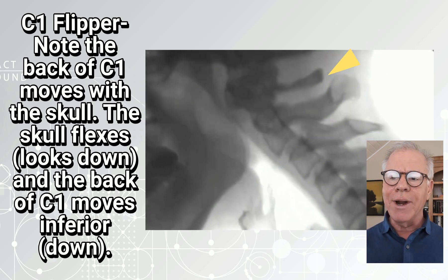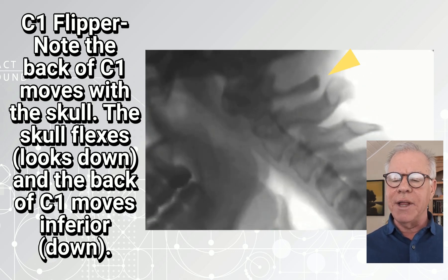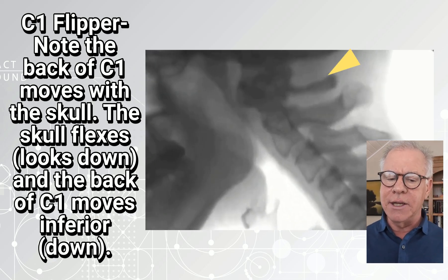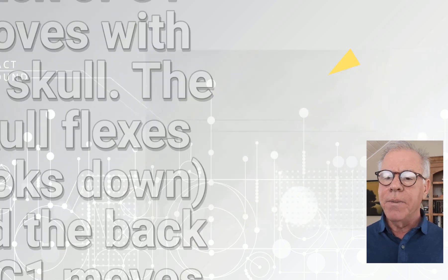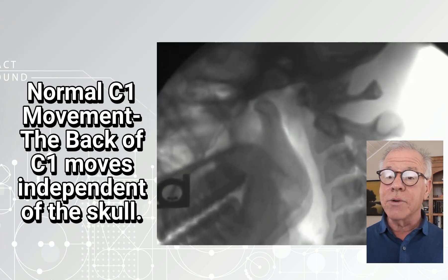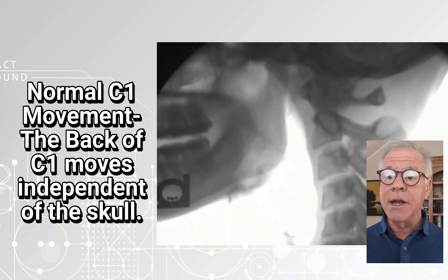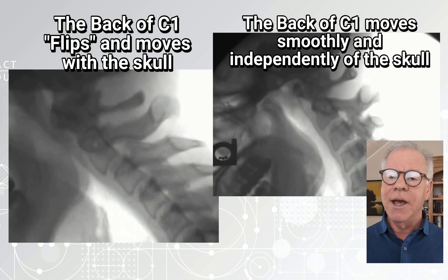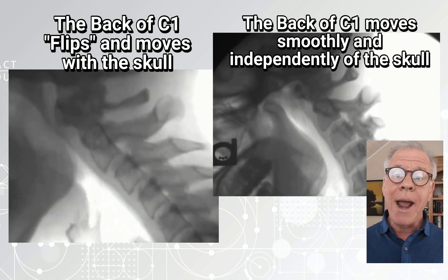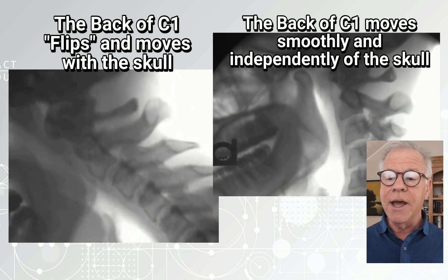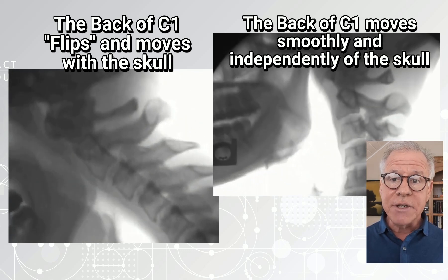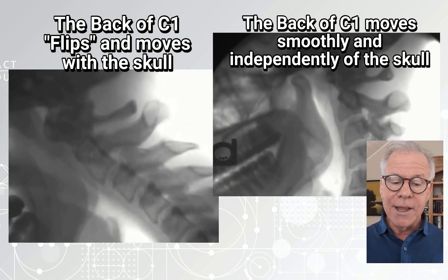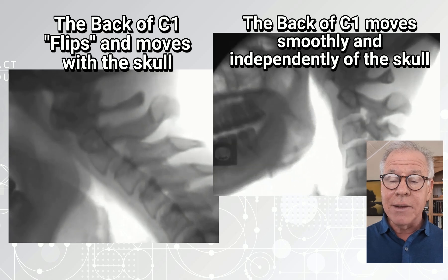And that's not normally what happens. Normally, there's independent movement there between the skull and C1. So this is a more normal DMX run, and you can see on this one something different happening. If we compare them, on the right you're seeing that the back of C1 moves smoothly and independently of the skull, whereas on the left, they're linked.